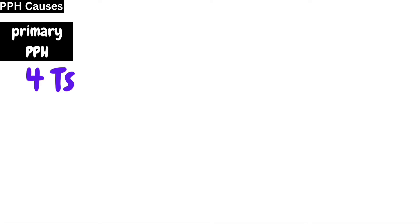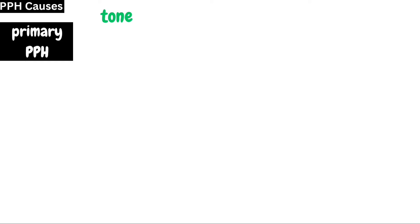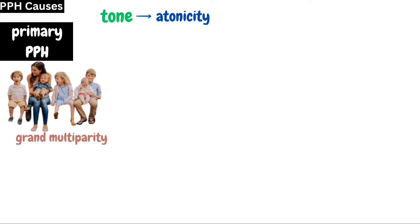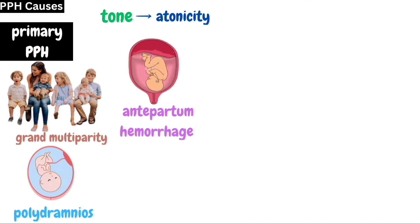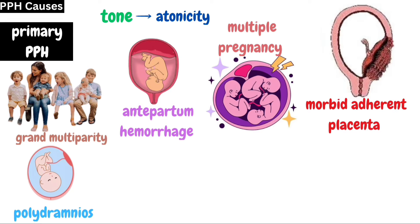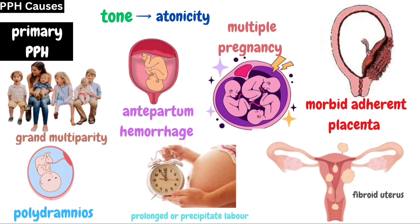The causes of primary PPH include four T's: tone, trauma, tissue, and thrombin. Regarding the first T — tone — when the tone of the uterus is disturbed or when the uterus becomes atonic, the blood vessels at the placental site remain open and cause excessive bleeding. Atonic uterus is caused by conditions such as grand multiparity, polyhydramnios, antepartum hemorrhage (including placenta previa and abruptio placenta), multiple pregnancy, morbid adherent placenta, prolonged or precipitate labor, and fibroid uterus.